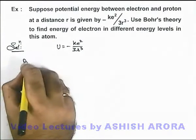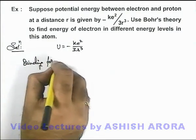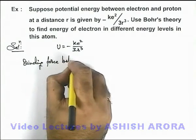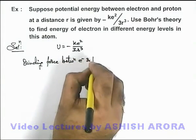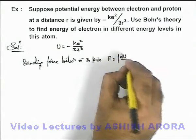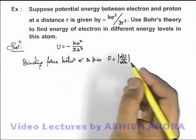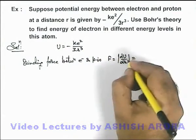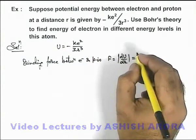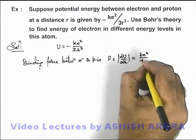Now in this atom, if we are given with a potential energy as minus k e square by 3 r cube, then we can directly write down the binding force between electron and proton. This force can be given as mod of dU by dr, and on differentiating we get the final value as k e square by r to power 4.